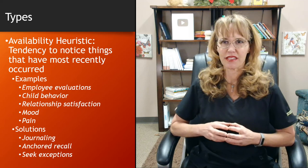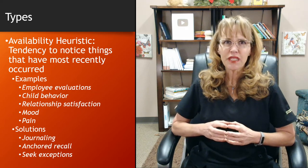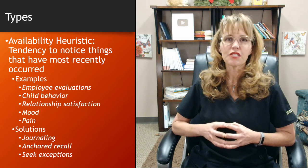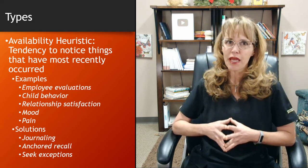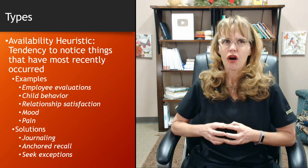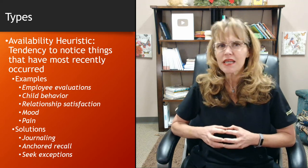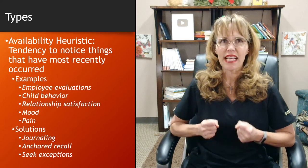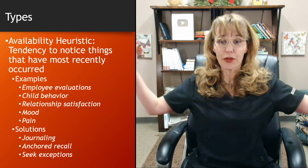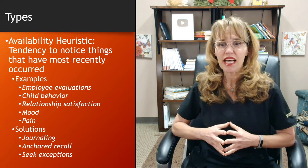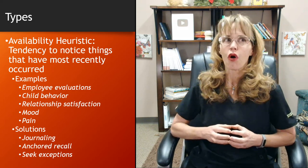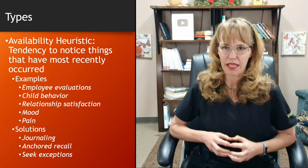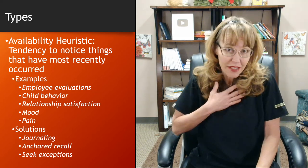Also seek exceptions. Our availability heuristic is based on what has most recently occurred, so maybe somebody made a mistake or broke a promise most recently and we tend to think of that as happening more frequently than it really does. So look for exceptions — when have they not done that, when have they acted differently, or when have you felt differently?